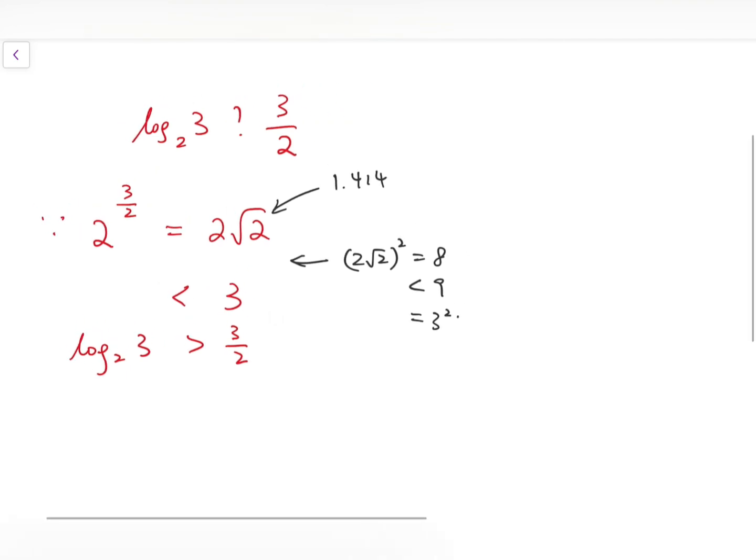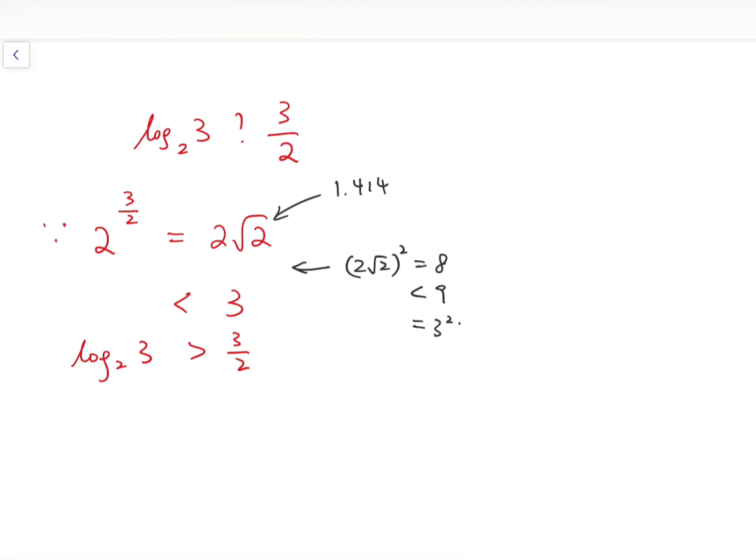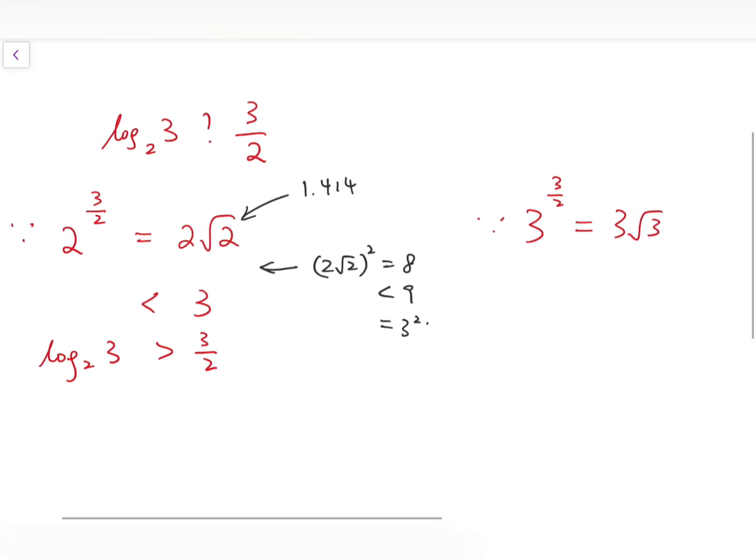Now, on the other hand, if you compare log base 3 of 5 with 3 over 2, you can do that by looking at 3 to the power of 3 over 2, and that is 3 times root 3. If you square it, you get 27. So it's root 27 and it's larger than root 25, that is 5.